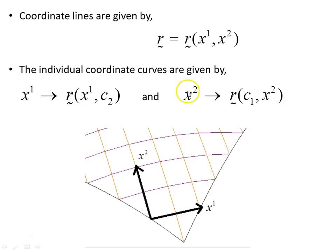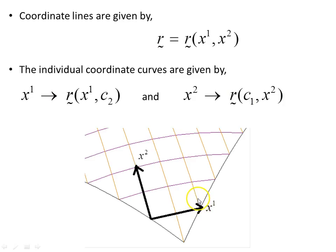The x2 coordinate lines are given by the position vector where x1 is held constant at different values and x2 is allowed to vary. So for some value c1 equals a, with x1 equals a, we vary x2 and get the orange coordinate line.